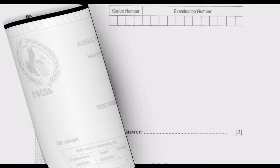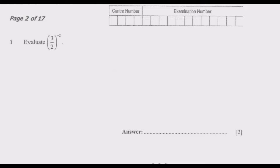Evaluate: open bracket, 3 over 2, close bracket, to the power negative 2. This one is from indices. Once you go through as many past papers as possible, you discover that these questions are the same — it's just changing numbers, otherwise the principles remain the same. That's why if you go through as many past papers as possible, it's difficult for you to fail.